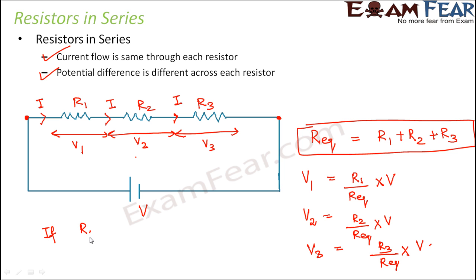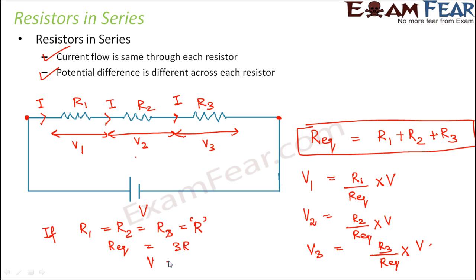Considering a special case where R1 equals R2 equals R3 equals R — all resistances are of equal value — the R equivalent of the circuit would be R plus R plus R, which equals 3R. In that case, the voltage across each resistor would also be the same. The voltage across each resistor would be equal to V by 3, so V/3 plus V/3 plus V/3 makes the total V. The total V gets equally distributed among the three resistors.